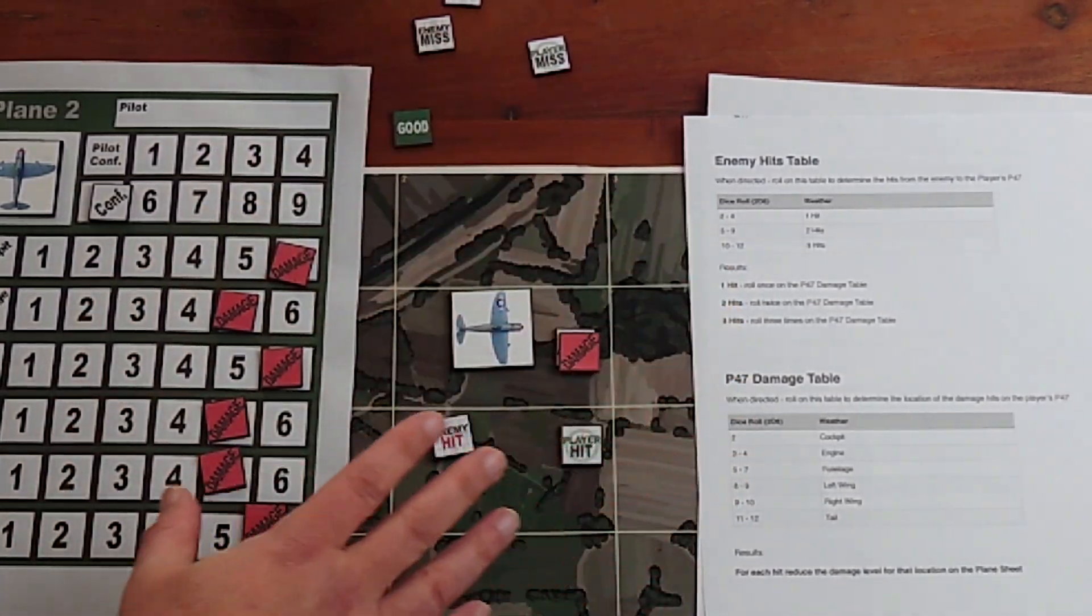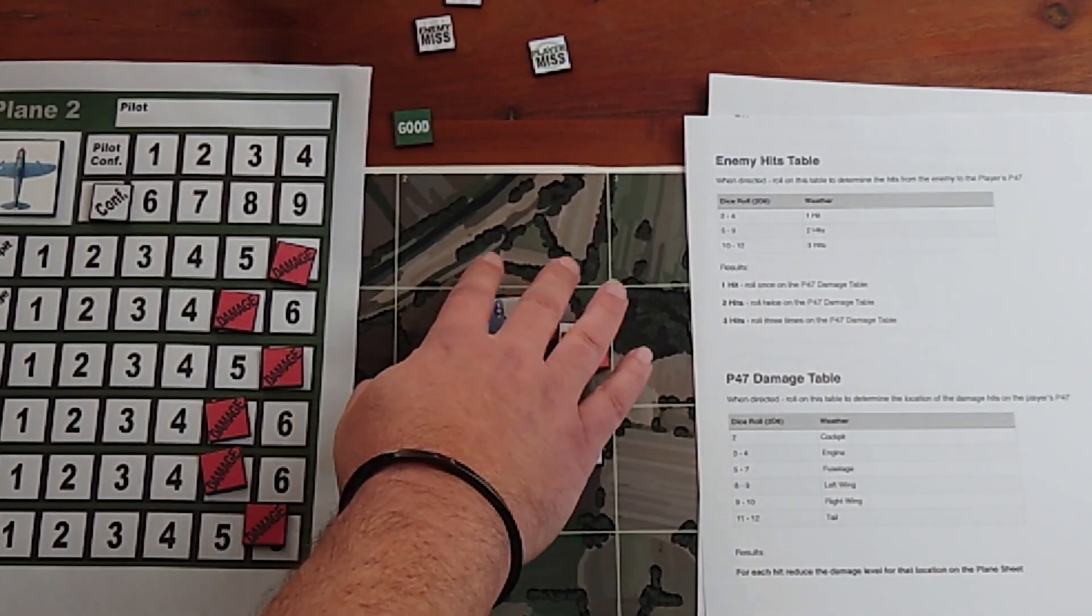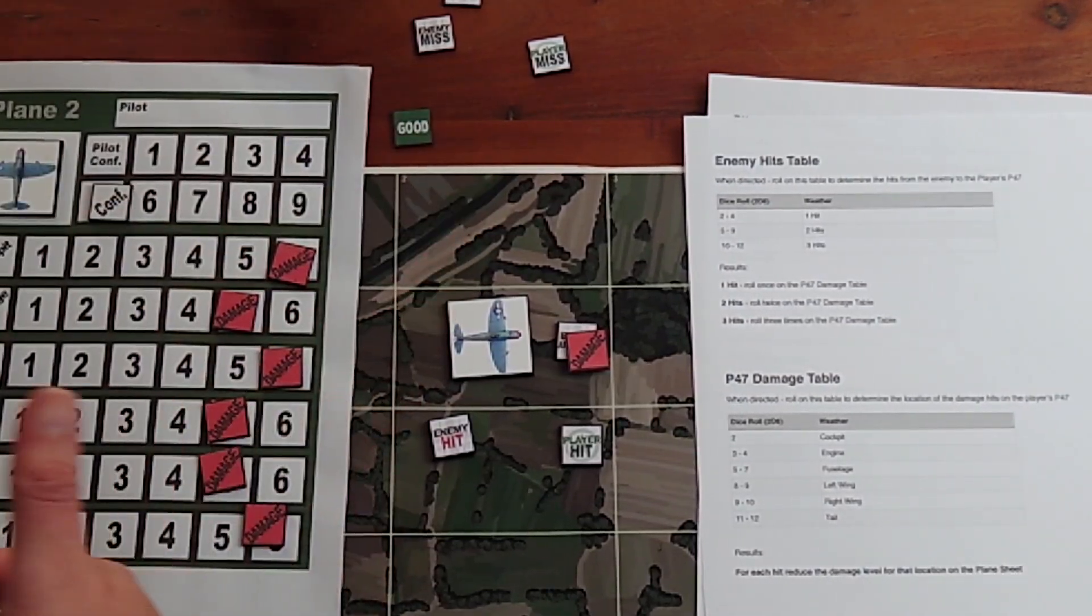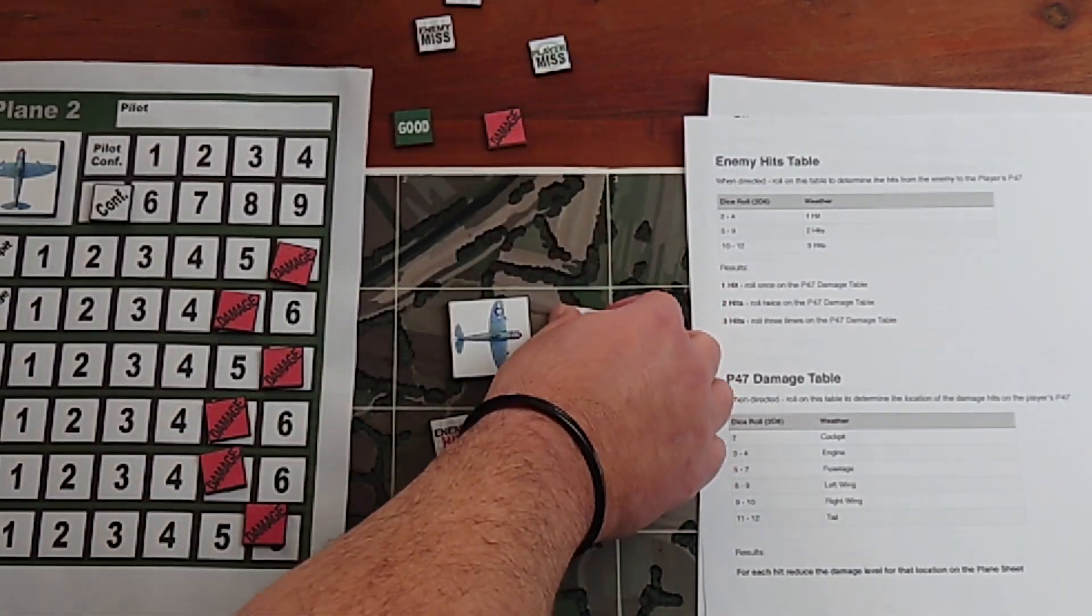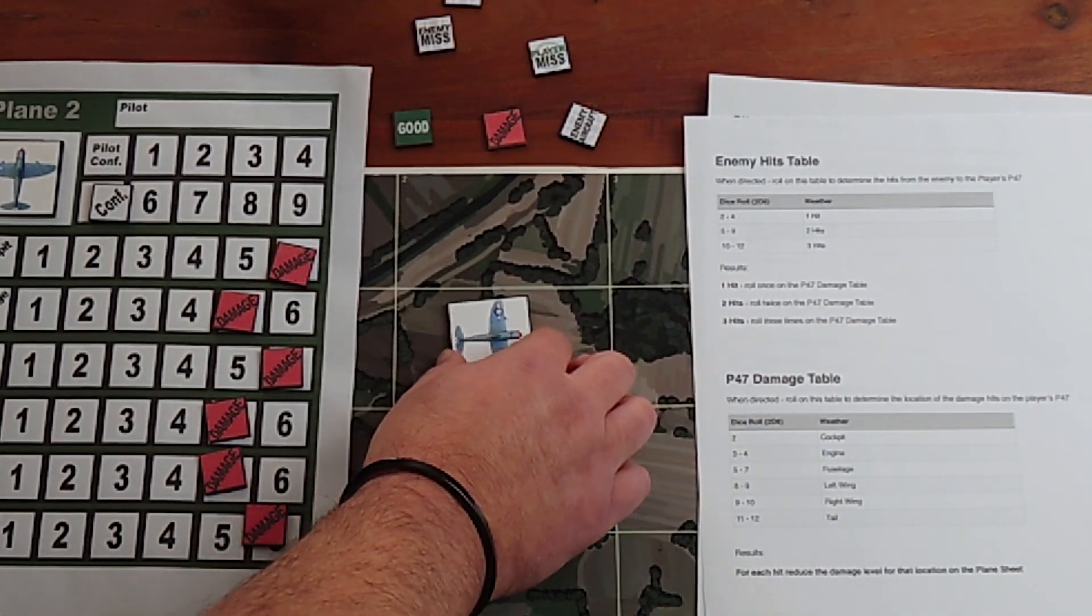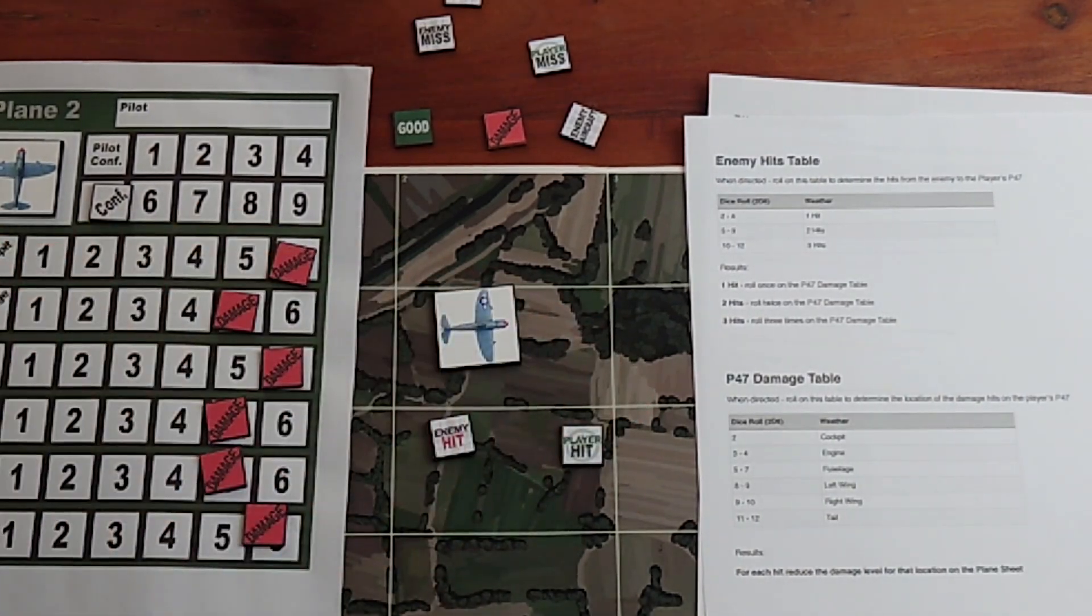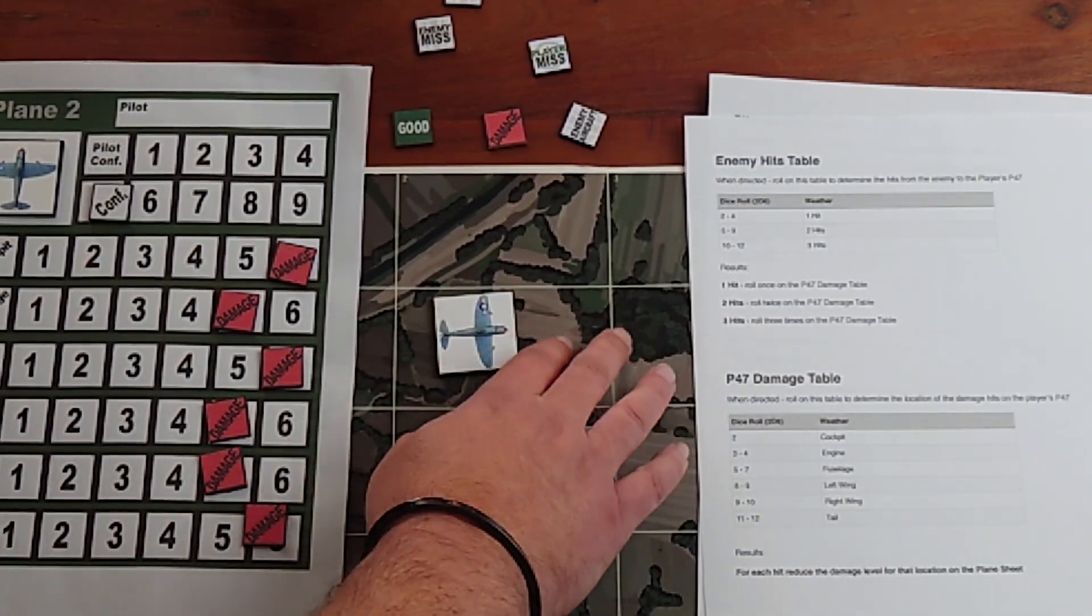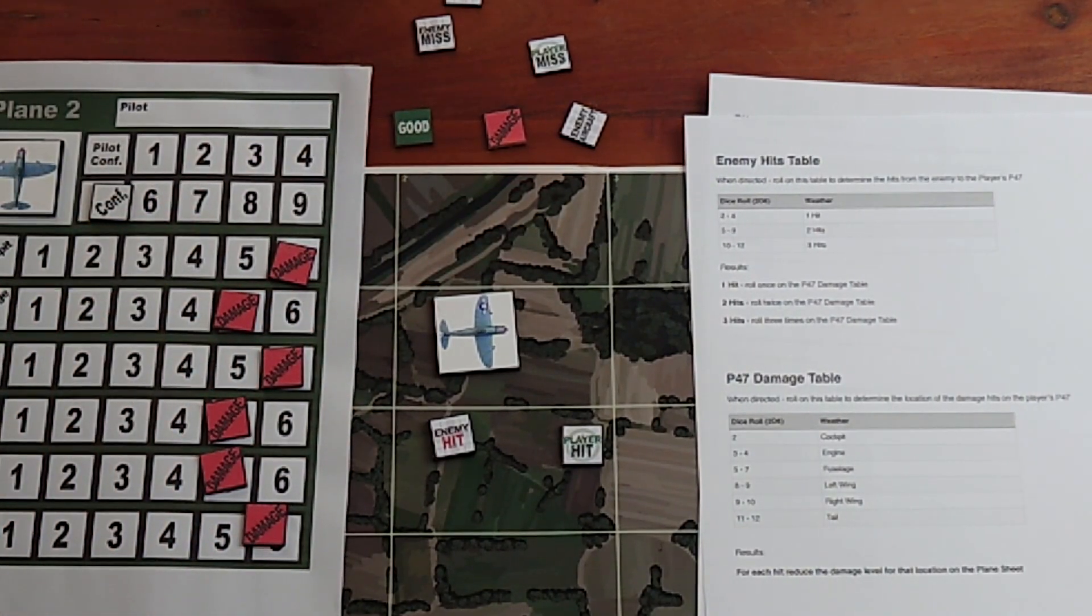That is that part of the combat done. If the enemy plane, even if it's damaged, is still in the zone, then we would go through it again and can continue to do so until either all the enemy counters have been removed or, in the unlikely unfortunate event, a P-47 is removed. That would be the combat resolved. It may take several turns depending on how many enemy aircraft or ground forces are in the zone.